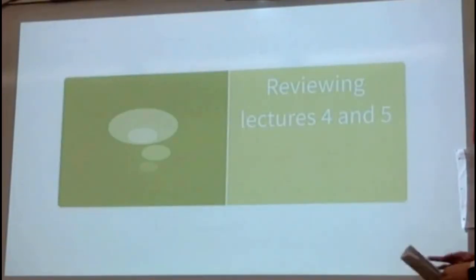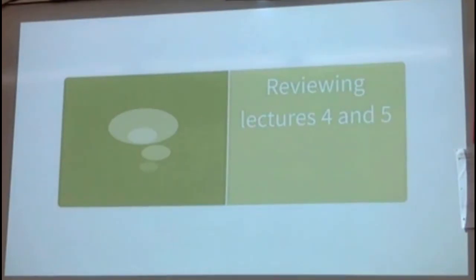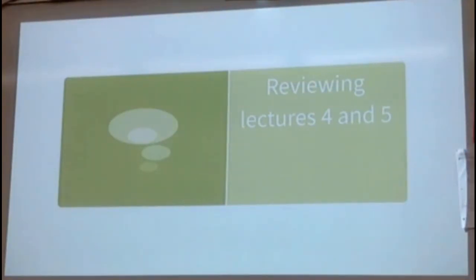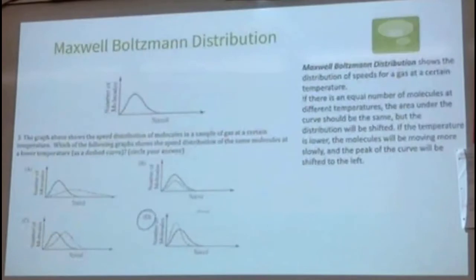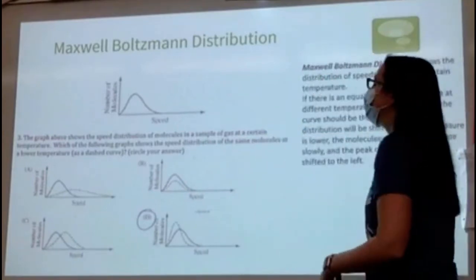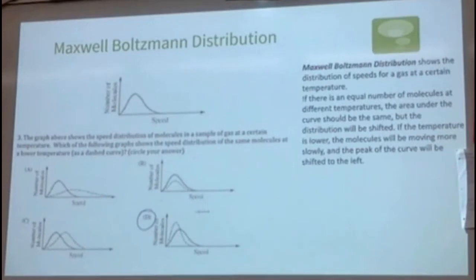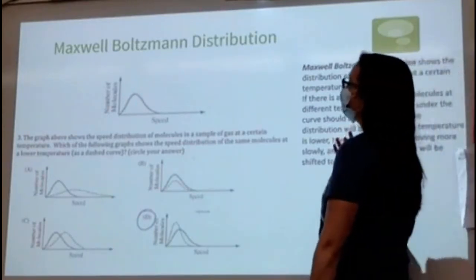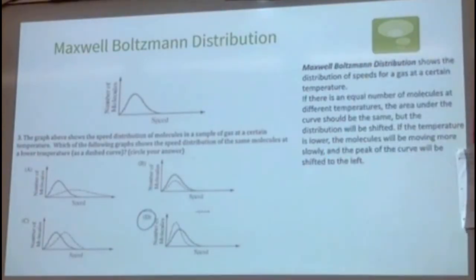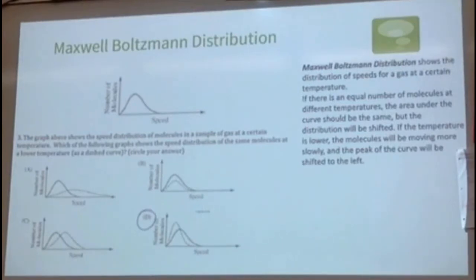Now getting into sections 3.4 and 3.5. The first part involves the Maxwell-Boltzmann distribution. They've started asking more questions using it. The Maxwell-Boltzmann distribution shows the distribution of speeds of a gas at a certain temperature.